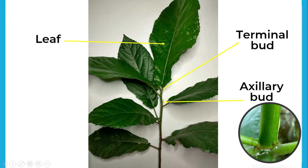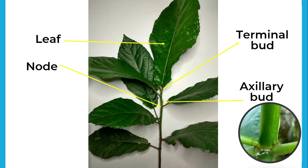The axillary bud is on the upper part of the node or nodes, and this will later create another part of the plant. We have what we call the nodes, which bear axillary buds that can either develop into branches, flowers, or cones. This is also where the petiole of the leaves attaches into the node.